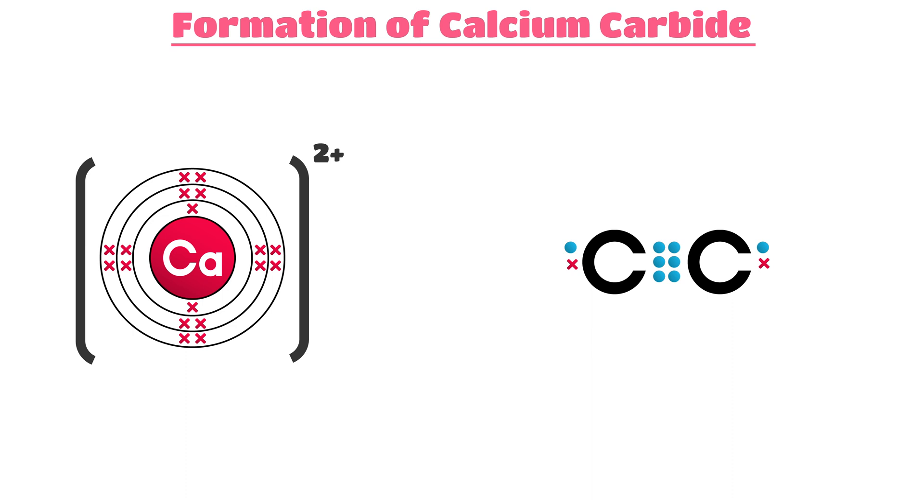First of all, each carbon atom will give two electrons to be shared between themselves. Then, when each carbon atom gives three electrons to be shared, it will have seven electrons each.